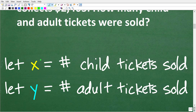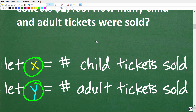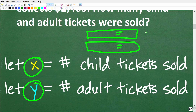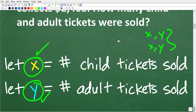As a general rule in algebra, the number of variables you're solving for is how many equations you need to build. Since we're solving for both x and y, we're going to need two equations. This concept is called a system of equations — or more precisely, a two-variable linear system. So now we need to build those equations.